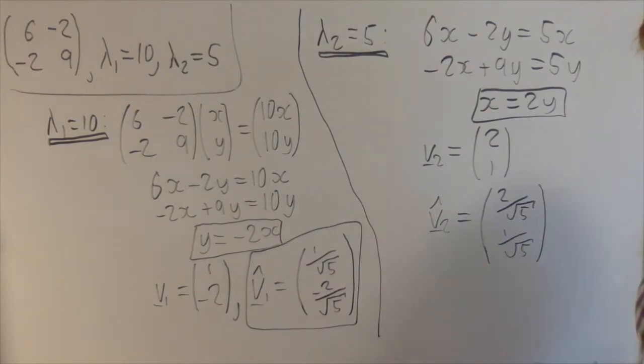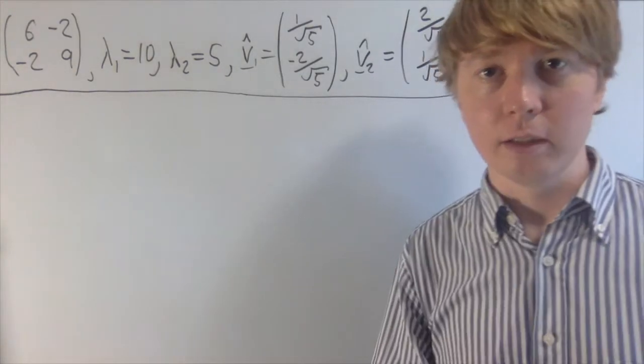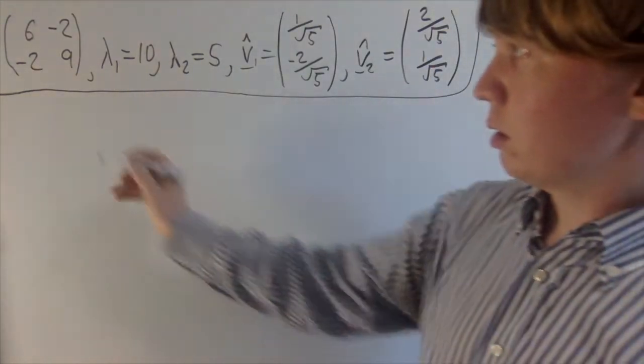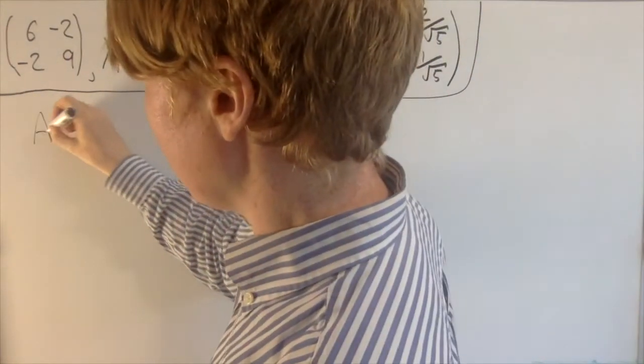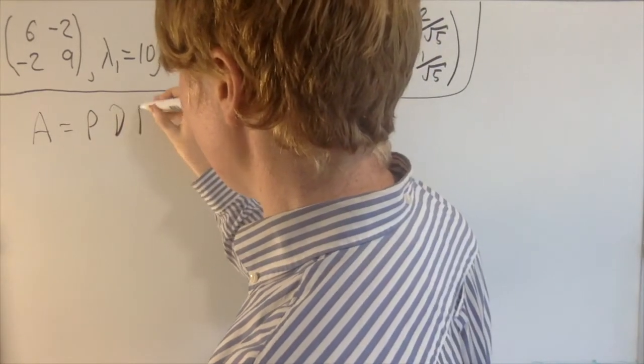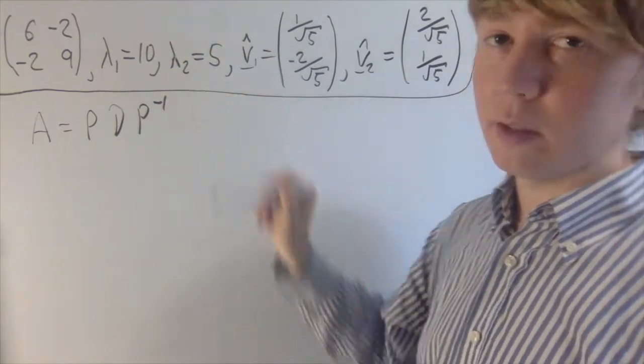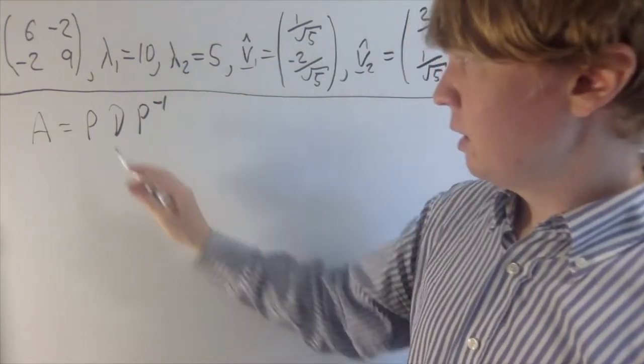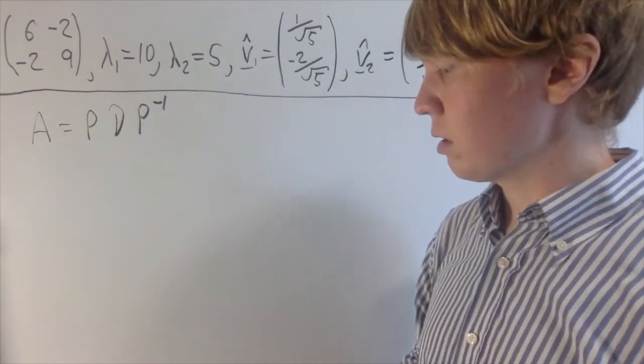So now we're ready to actually diagonalize this matrix. So now we've done all the work we need to do to actually diagonalize this matrix. And we say we call this original matrix A. What I'm going to do next is actually write it in the form P times by D times by P inverse, where this is our diagonal matrix with the eigenvalues on the leading diagonal. And then P is going to be the matrix using corresponding eigenvectors as columns.